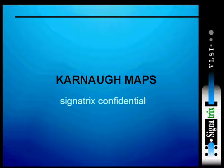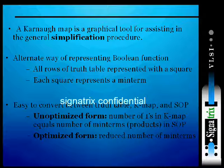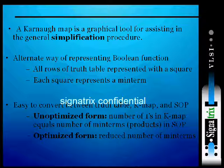So let us have a look at what exactly Karnaugh maps are. It is a graphical tool for assisting in the general simplification procedure, going to simplify the terms further. It is an alternate way of representing Boolean functions, where all rows of the truth table are represented with a square, and each square represents a min term. It is easy to convert between the truth table, K-map, and SOP — the unoptimized form and the optimized form.